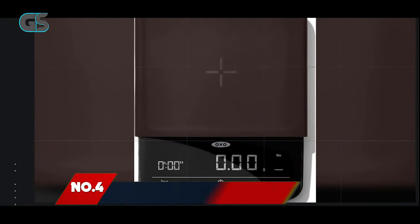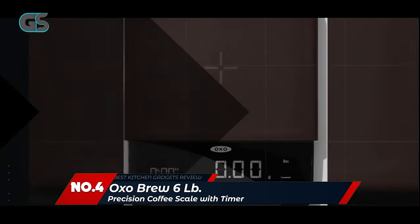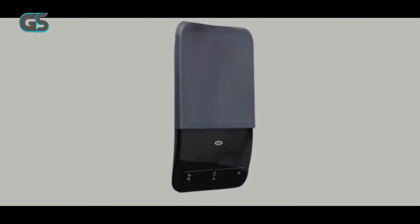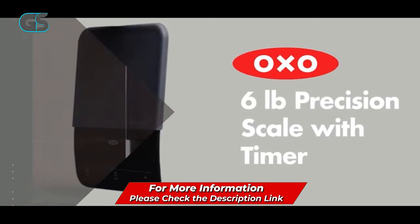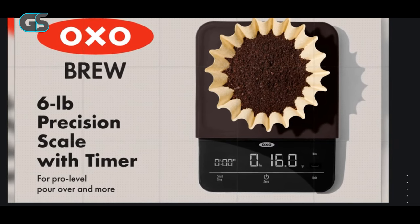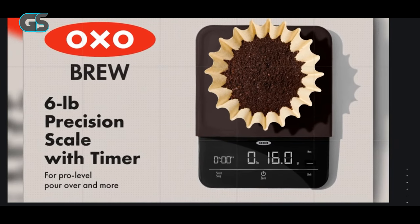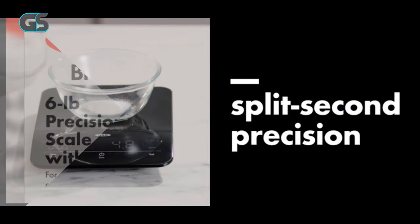Number 4. OXO Brew 6LB Precision Coffee Scale with Timer. The OXO Brew 6LB Precision Coffee Scale with Timer, showcased in this video, is an absolute game-changer for coffee lovers and baristas alike. With meticulous attention to detail, this scale redefines the art of coffee brewing, making every cup an experience to savor.